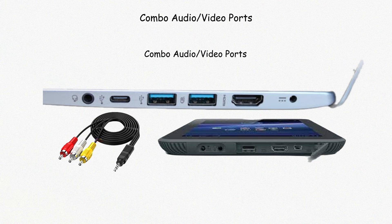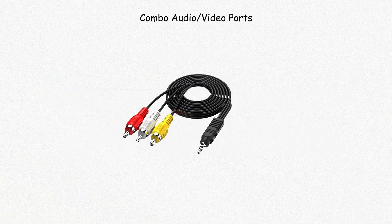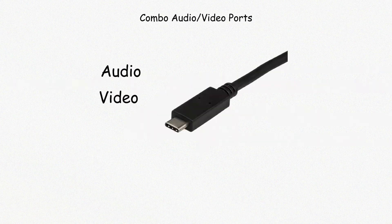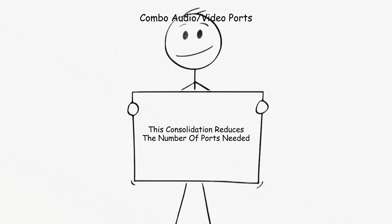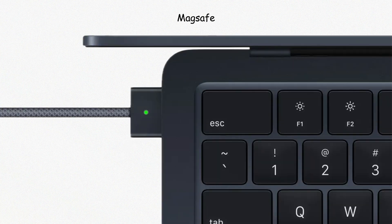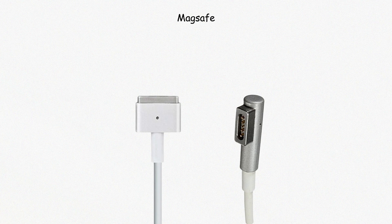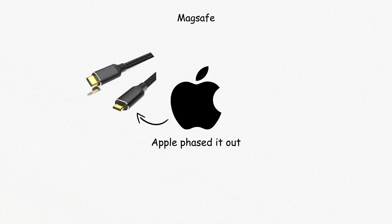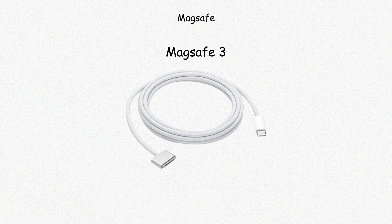Combo audio-video ports are becoming more common on compact laptops and tablets. These may look like a standard 3.5 millimeter headphone jack but support both audio input and output, or video output, through adapters. Some USB-C ports support audio, video, data, and charging all at once, depending on the device's internal configuration. This consolidation reduces the number of ports needed but requires compatible accessories. MagSafe is a magnetic power connector originally developed by Apple — it snaps into place for charging and disconnects safely if pulled, preventing a laptop from being dragged off a desk. Apple later reintroduced a new version called MagSafe 3 for modern MacBooks, providing dedicated charging while leaving USB-C ports free for data and video.